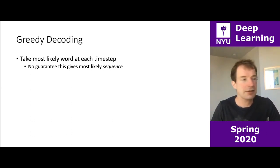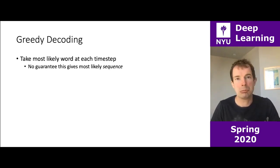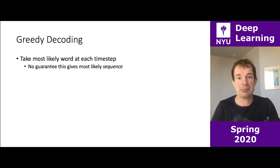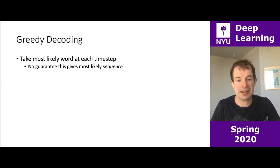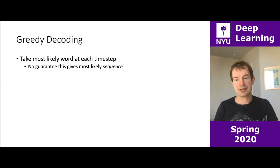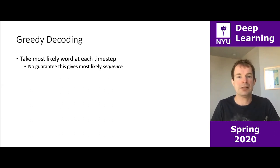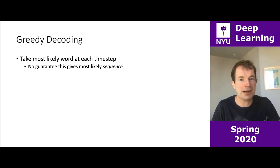One thing to do is greedy decoding — just take the most likely first word, and then given that word, predict the most likely second word, then the third, and so on. But there's no guarantee it's actually going to be the most likely sequence, because if you make a bad step at some point, there's no way of backtracking your search to undo any previous decisions. Exhaustive search is impossible, so a middle ground is what's called beam search.